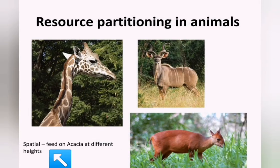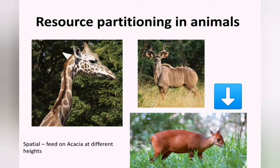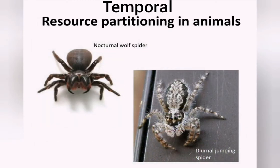We also see spatial resource partitioning in herbivores that feed on the same resource at the same time but use different parts of it. Here we see three different herbivores eating thorn trees or acacias at different heights: the giraffe eating the top leaves, the impala eating the midsection, and the little duiker eating the shoots around the bottom. They are not in competition because they eat different parts of the same resource.